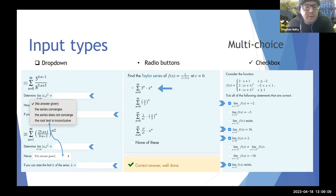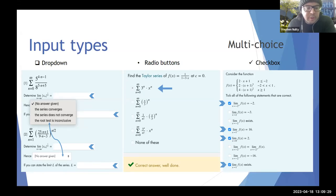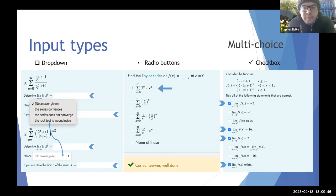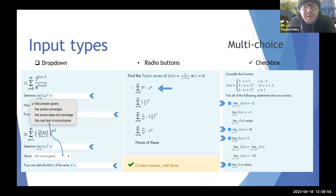STAC also supports a number of multiple choice input types. The first is a dropdown question type — shown here in the context of a question about convergence of series. It's particularly useful when there's a single correct answer and specifically for text-based answers, like whether a series converges, doesn't converge, or the test isn't conclusive. There's also a radio button option, again particularly useful when there's a single correct answer, and STAC supports the use of LaTeX in radio button options — for instance, in a question about finding the Taylor series of a function. Finally, the checkbox input type is particularly useful when there are multiple correct and incorrect answers and you'd like to do some kind of partial grading.